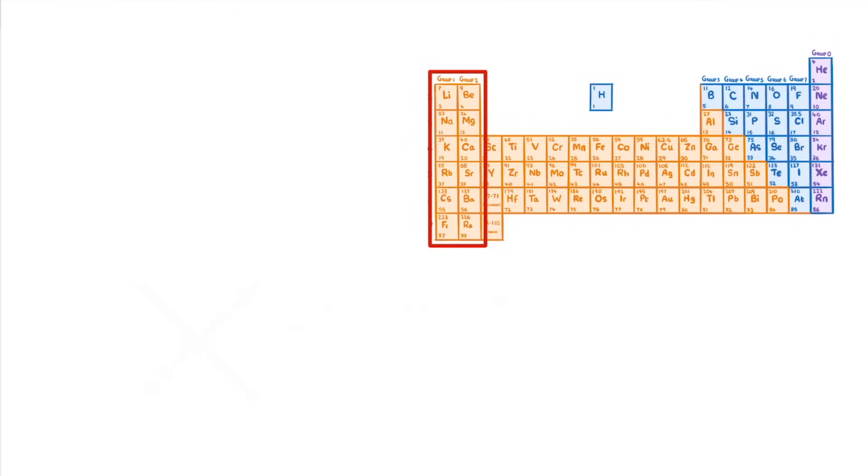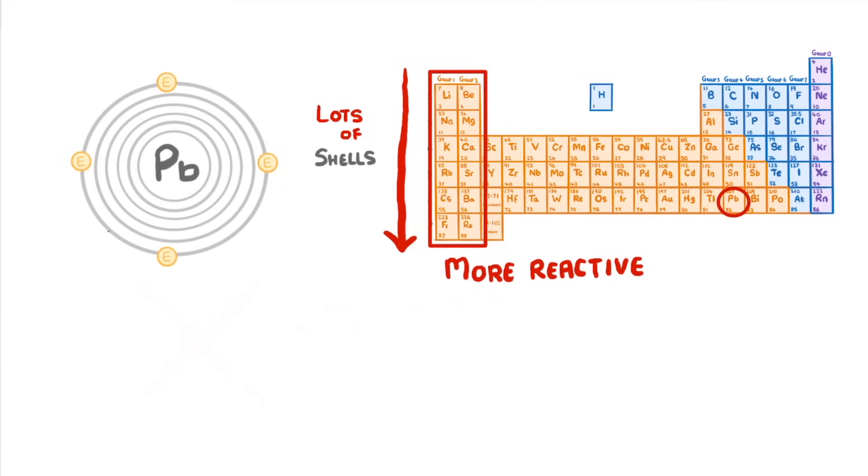Another feature of metals is that they tend to become more reactive towards the bottom of the table. This is because elements far down the table have lots of shells. For example, lead, which is Pb here on the table, has 6 shells, so its outermost shell is really far from the nucleus.